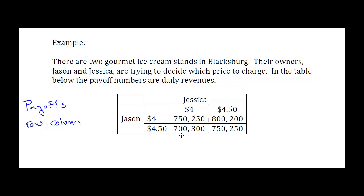If Jessica's going to continue to pick $4, then Jason says: if I stay at $4.50 I make 700, but if I change my strategy to $4 I would get 750, and I like 750 better than 700, so I want to change. So that means this can't be a Nash Equilibrium.